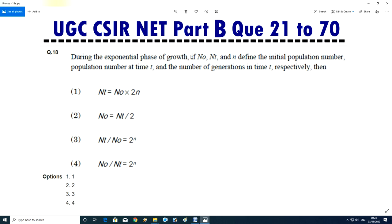Question No.18 - During the exponential phase of growth, N0, NT and N define the initial population number, population number at time T, and the number of generation at time T respectively. Answer is 3, this one.